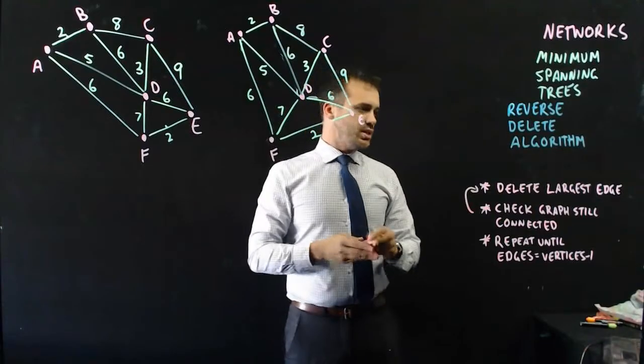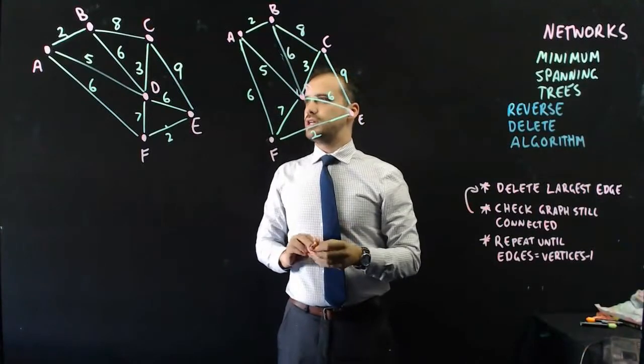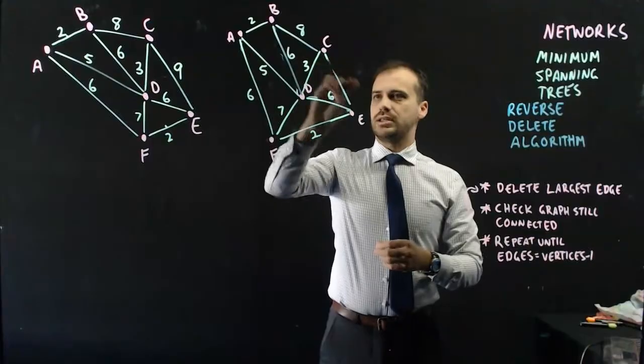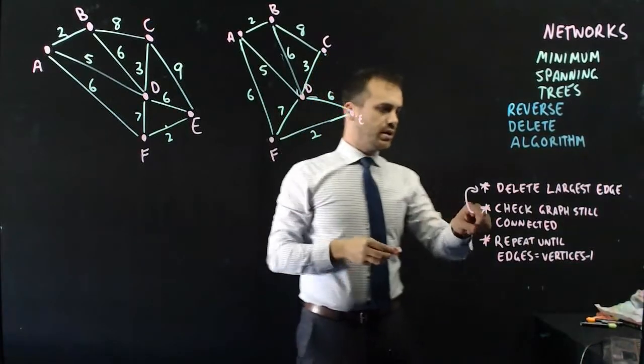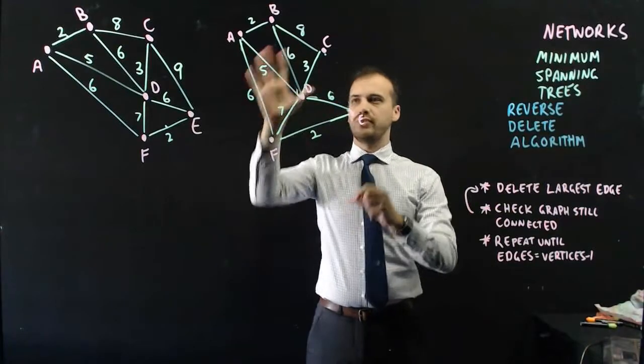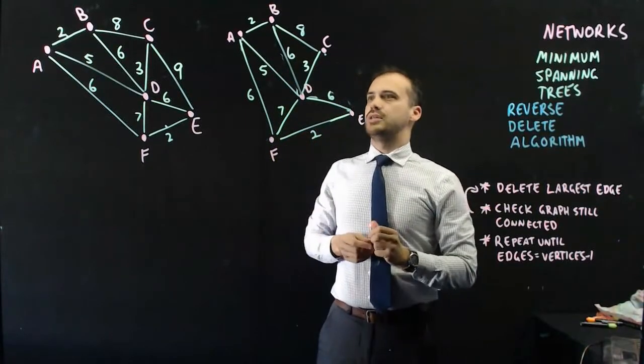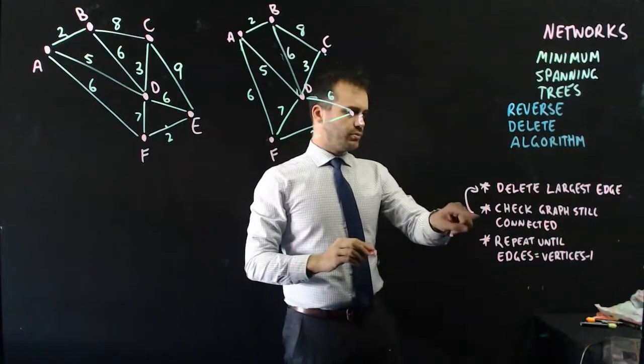So, what's the largest edge? Well, nine's the largest edge. I'm going to delete that. And then I say to myself, is the graph still connected? Are all the vertices still connected by an edge? Yes. Okay, repeat.